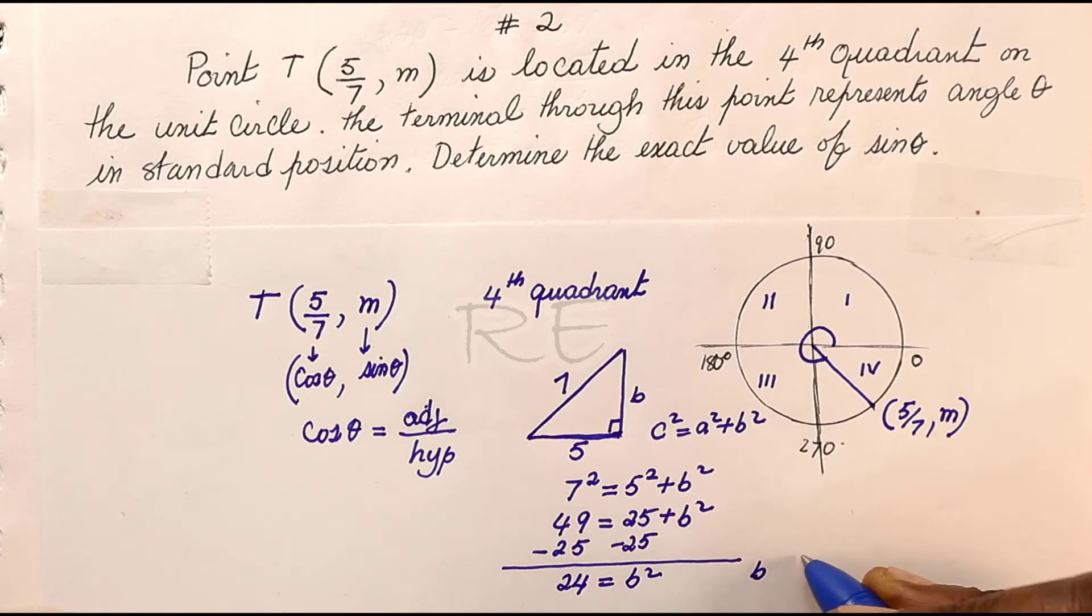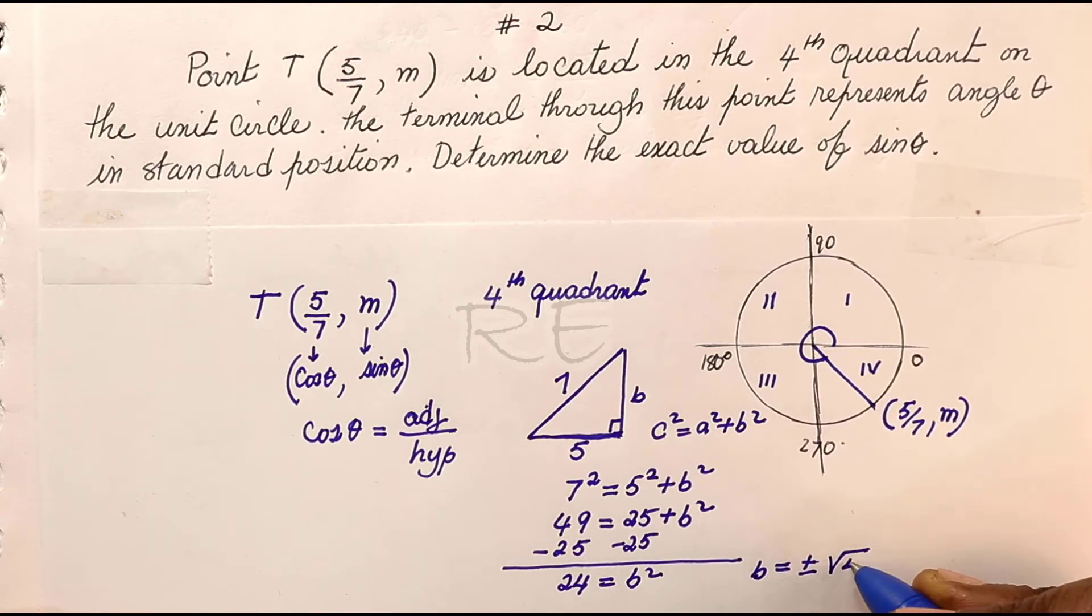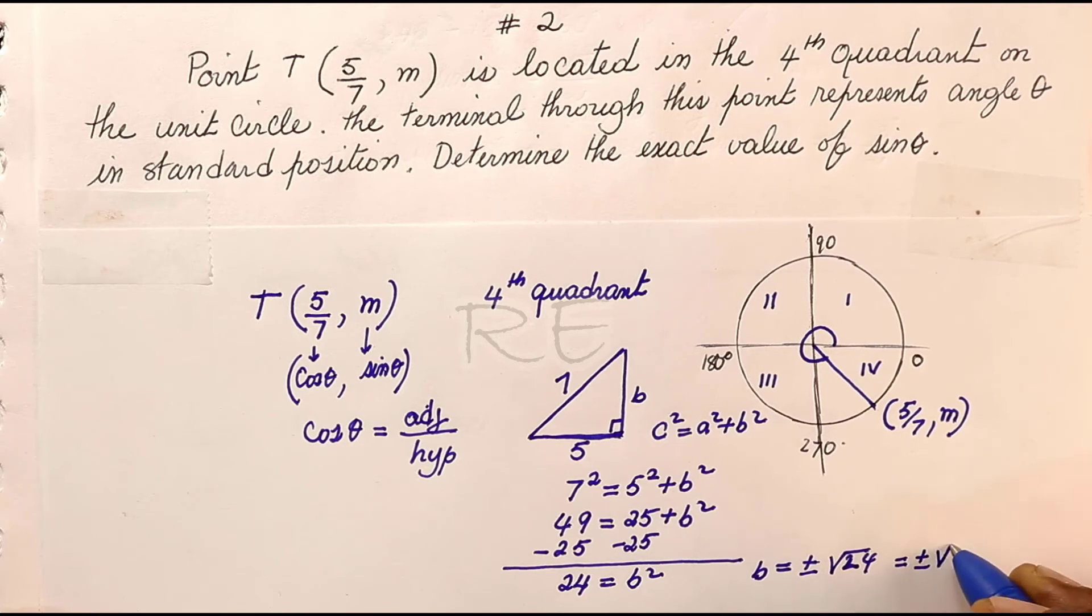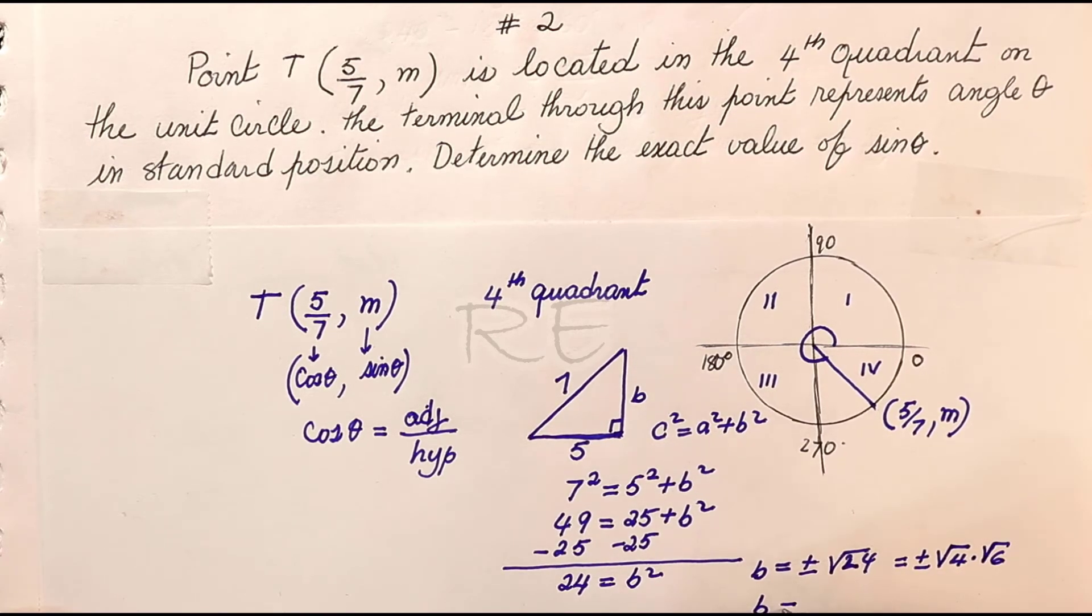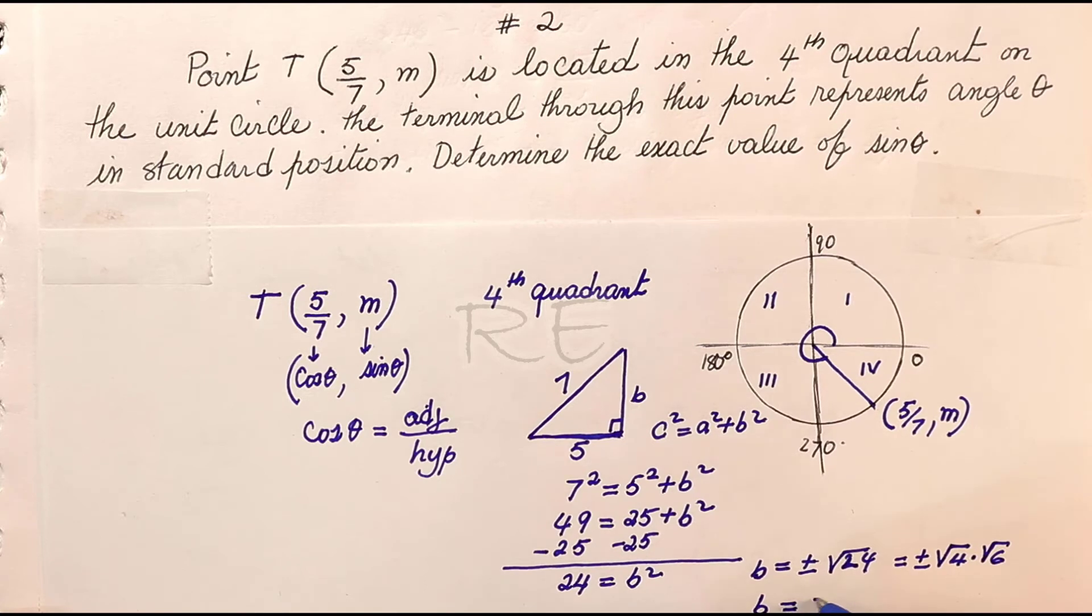Therefore, B should be plus or minus square root of 24. If we want to simplify this: plus or minus square root of 4 times square root of 6. So it should be B is equal to plus or minus 2 square root of 6.